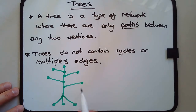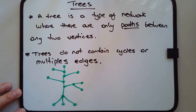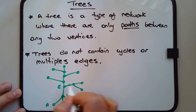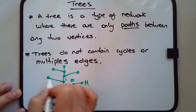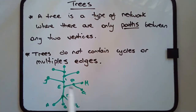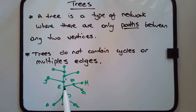This is also a tree. If I label all these vertices E, F, G, H, I, J — pick any two vertices and there's only one way to get there. So every walk is a path. There are no cycles and there are no multiple edges.